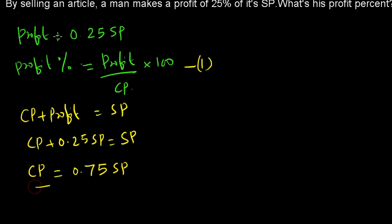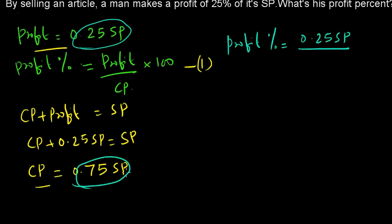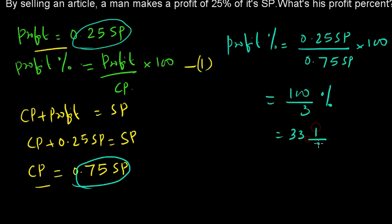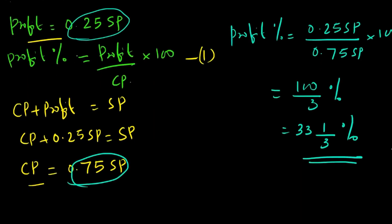Now substituting into the formula: profit percentage equals profit divided by cost price into 100, which is 0.25 SP divided by 0.75 SP, into 100. This gives 1/3 into 100, or 100/3 percent, which equals 33 and 1/3 percent. With a thorough understanding of the basic profit percentage formula, we can easily find this answer.